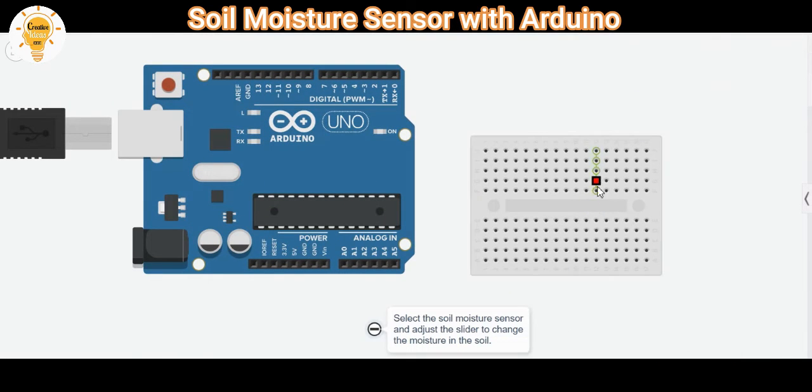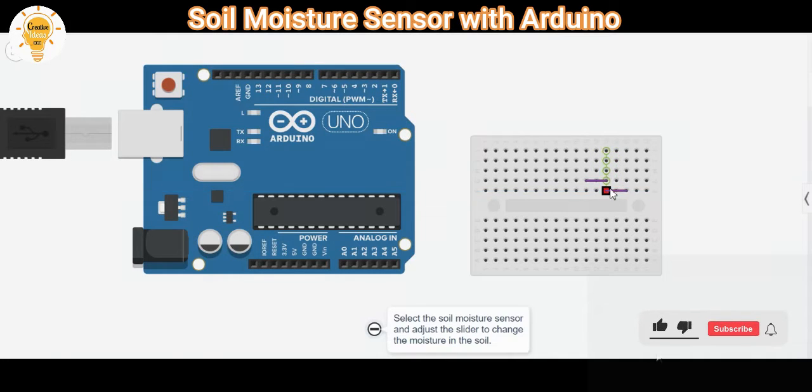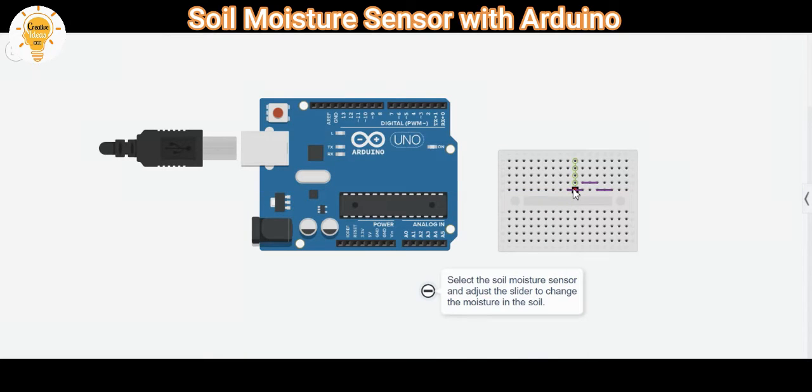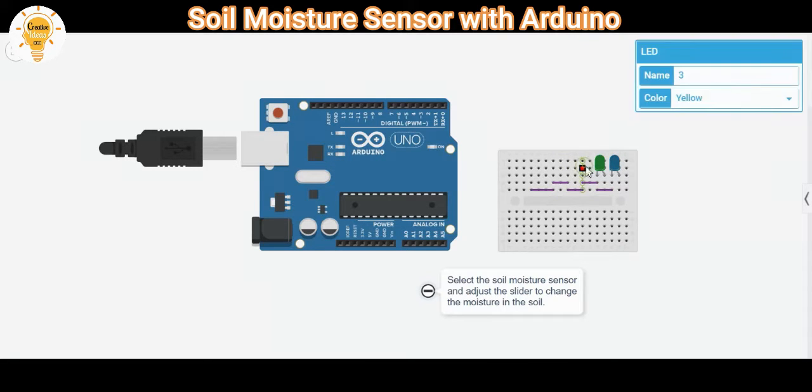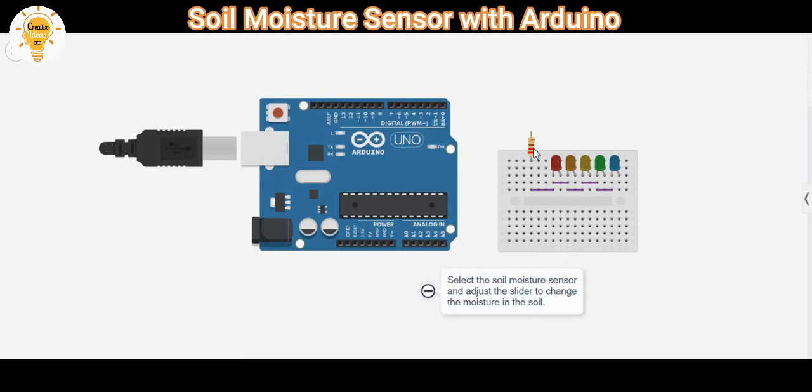The soil moisture sensor measures soil moisture based on the changes in electrical conductivity of the earth. Soil resistance increases with dryness. The design of the circuit is very simple: connect the probe to the board and provide a power supply to the board. Take the analog out pin from the board and connect it to the analog in pin A0 of the Arduino.